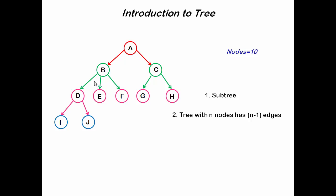Now count edges: 1, 2, 3, 4, 5, 6, 7, 8, and 9. So total number of edges equals 9, which is 1 less than the nodes. So we can say a tree with N nodes has N minus 1 edges.